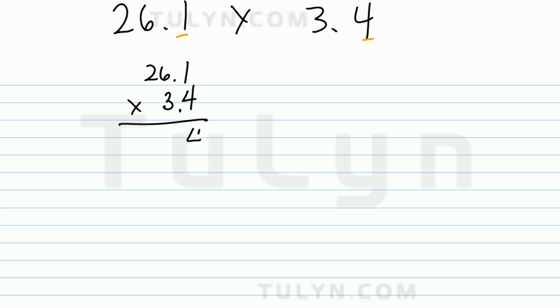So 1 times 4 is 4, 6 times 4 is 24, put the 2 at the top. 2 times 4 is 8, 8 plus 2 is 10.